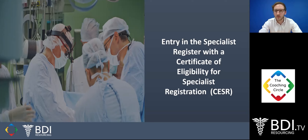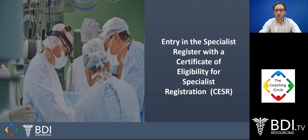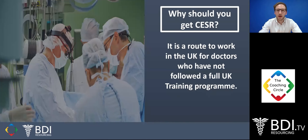There are three routes to the Specialist Register. First, the CCT route through full UK training. Second, CAESAR CP, where you start midpoint through the UK training program and work towards a CCT. Third — and what we're discussing today — CAESAR, which is a portfolio submission of evidence that the GMC and Royal College consider to be equivalent to the CCT route, demonstrating the same abilities and safety standards.